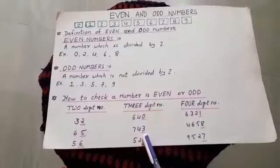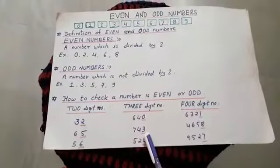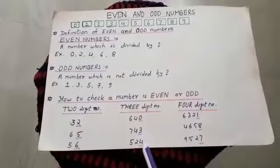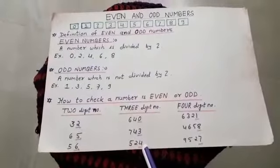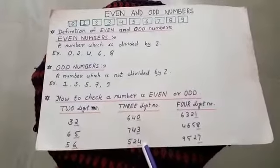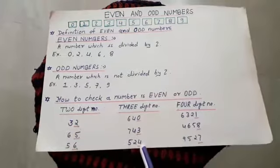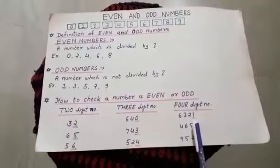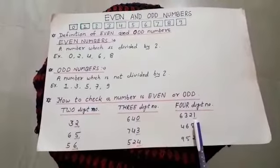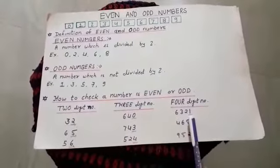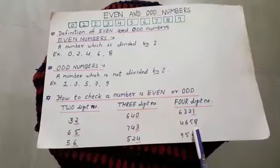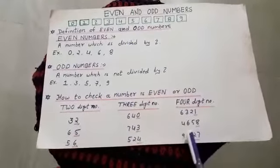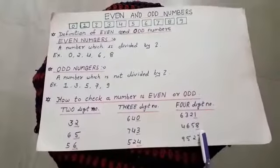The last digit is 3; 3 is an odd number, so the complete number is odd. The last digit is 4; 4 is an even number, so the complete number is even. The last digit is 1; 1 is an odd number, so the complete number is odd. The last digit is 8; 8 is an even number, so the complete number is even.